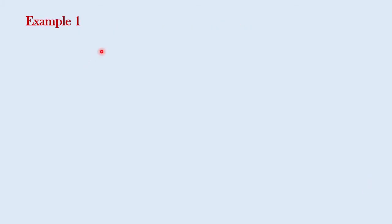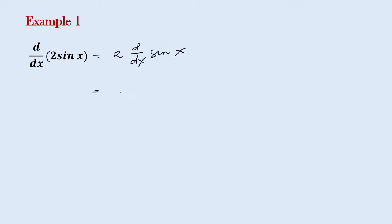So let us try to answer some examples. Let's say we have the derivative of 2 sine x. By the constant multiple rule, we can have this as 2 times the derivative of sine x. And therefore, based from our previous formulas, we have 2 cosine x.